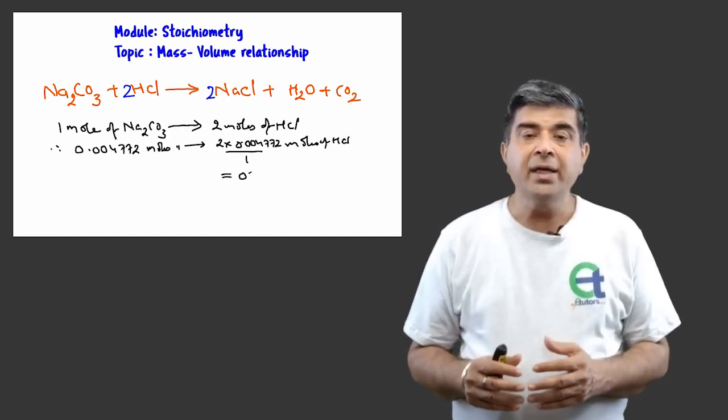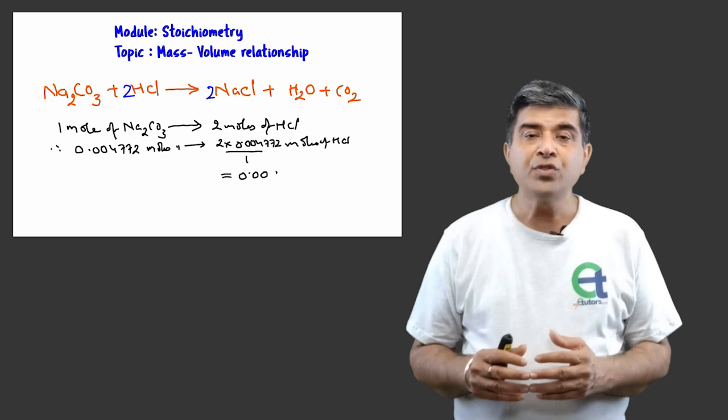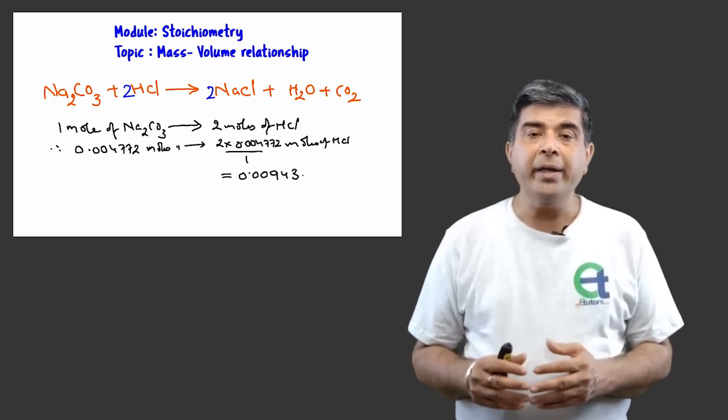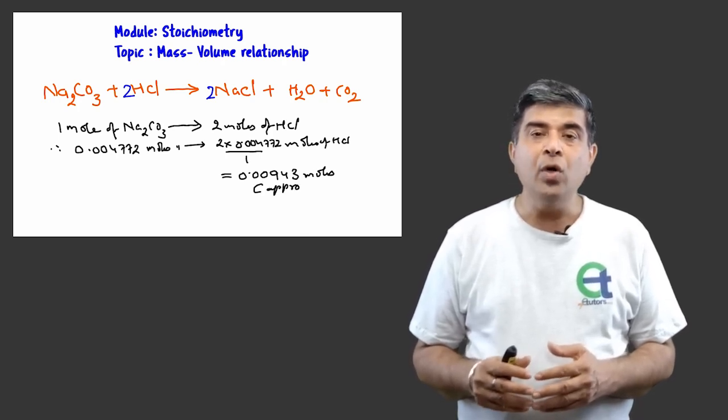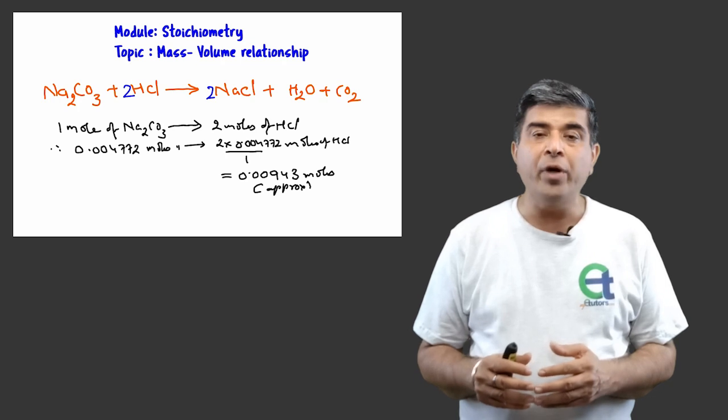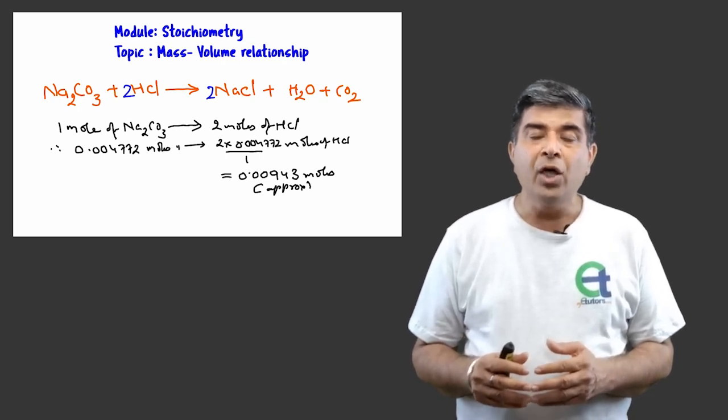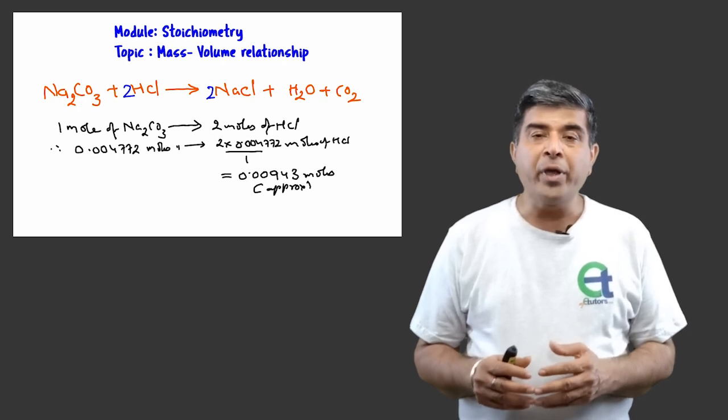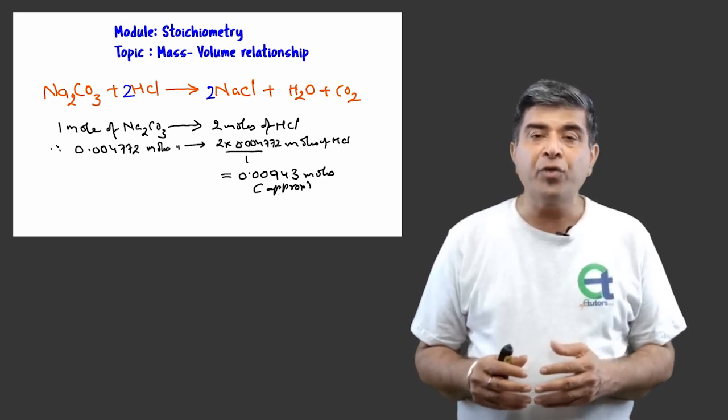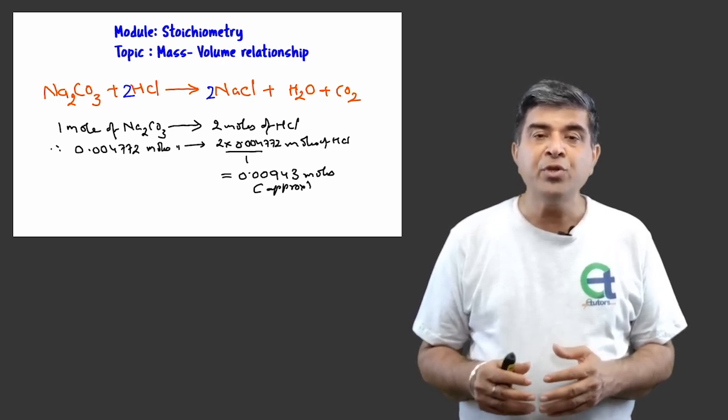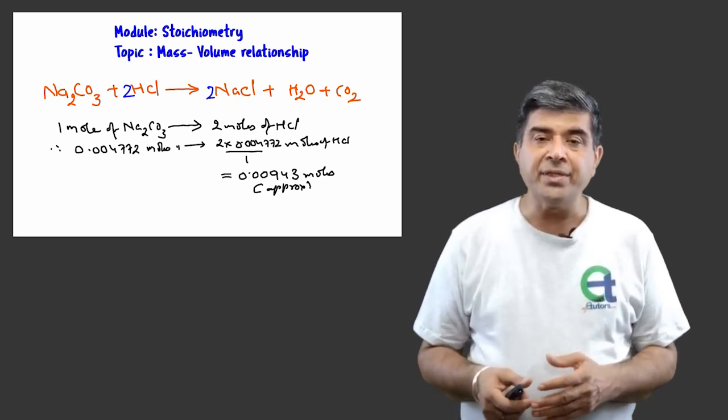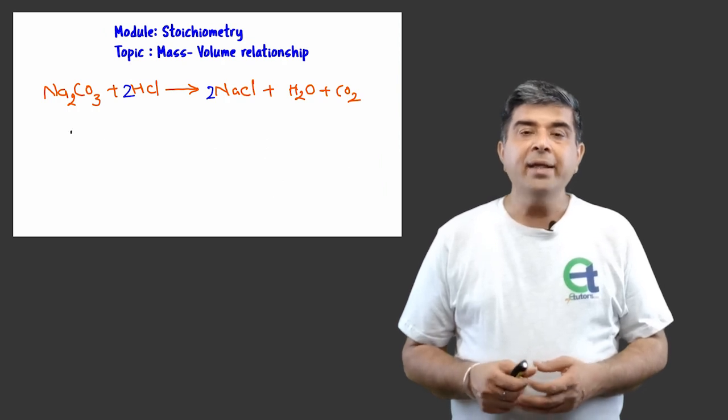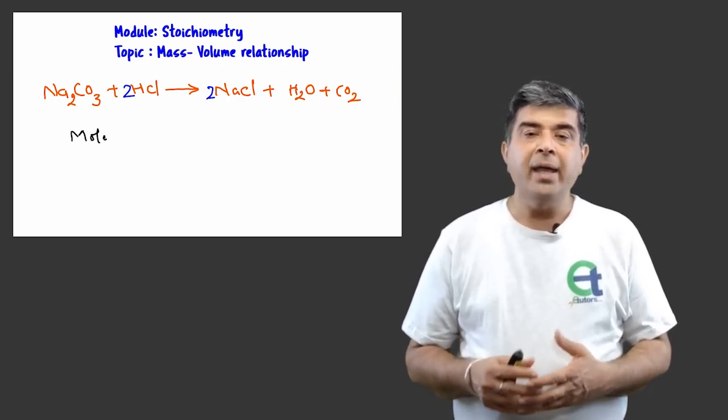Returning to the calculations, we can write 1 mole of sodium carbonate would require 2 moles of hydrochloric acid as per the balanced chemical equation. So 0.004772 moles of sodium carbonate would approximately require 0.00943 moles of hydrochloric acid for complete neutralization. And I am using unitary methods to calculate these simple calculations.